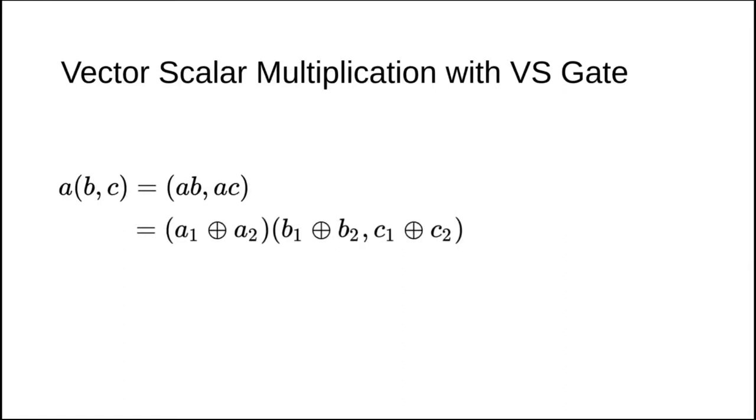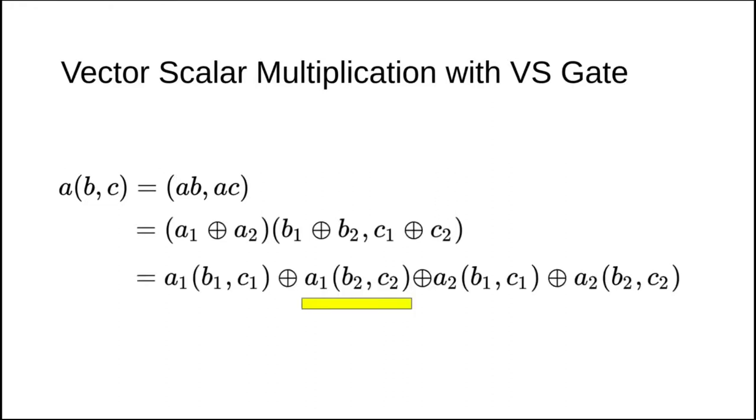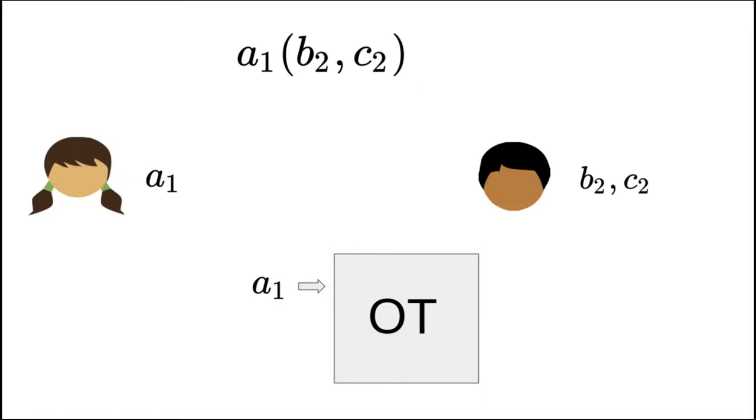Now I demonstrate how versus-gate works. Let's first expand all terms on the slide. As in the AND-gate evaluation, we get four terms. The first and the last term can once again be computed locally, while the middle two terms require interaction. In the interactive terms, one player holds the scalar and the other holds the vector. I will show only how to compute A1 times B2C2, as the other term is computed symmetrically.